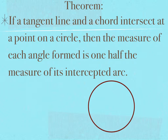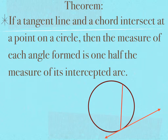Our first theorem in Section 4 states that if a tangent line and a chord intersect at a point on a circle, then the measure of each angle formed is one-half the measure of its intercepted arc. A picture to go with this theorem would be on my circle, I have a chord and a tangent line that intersect on my circle.